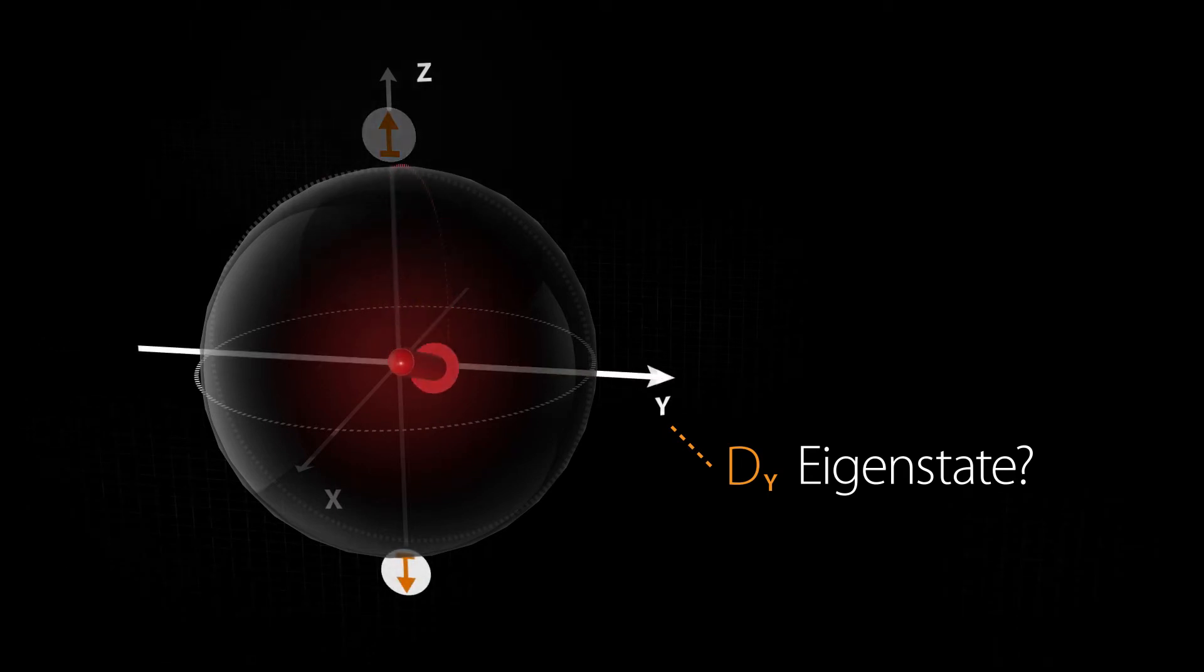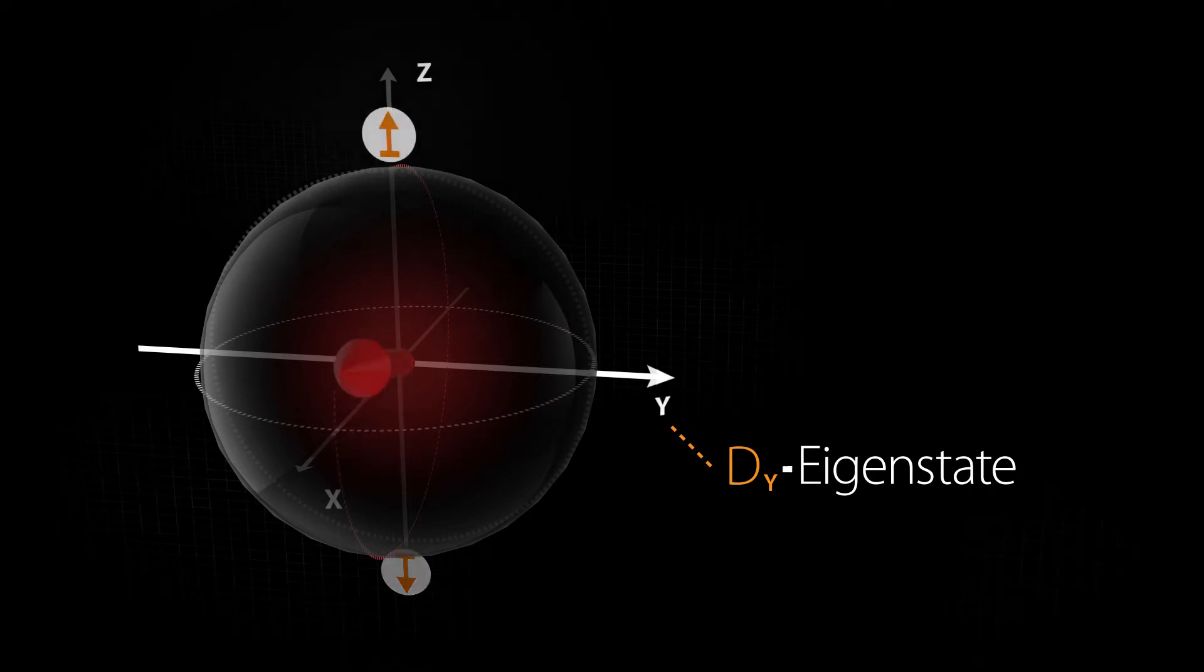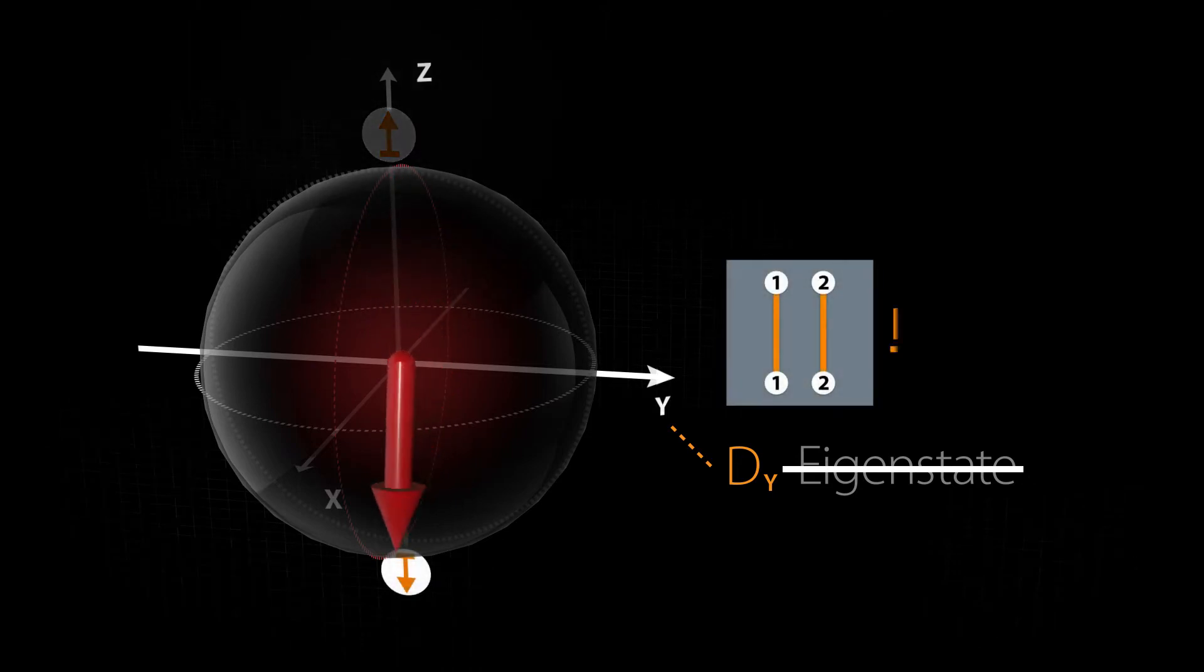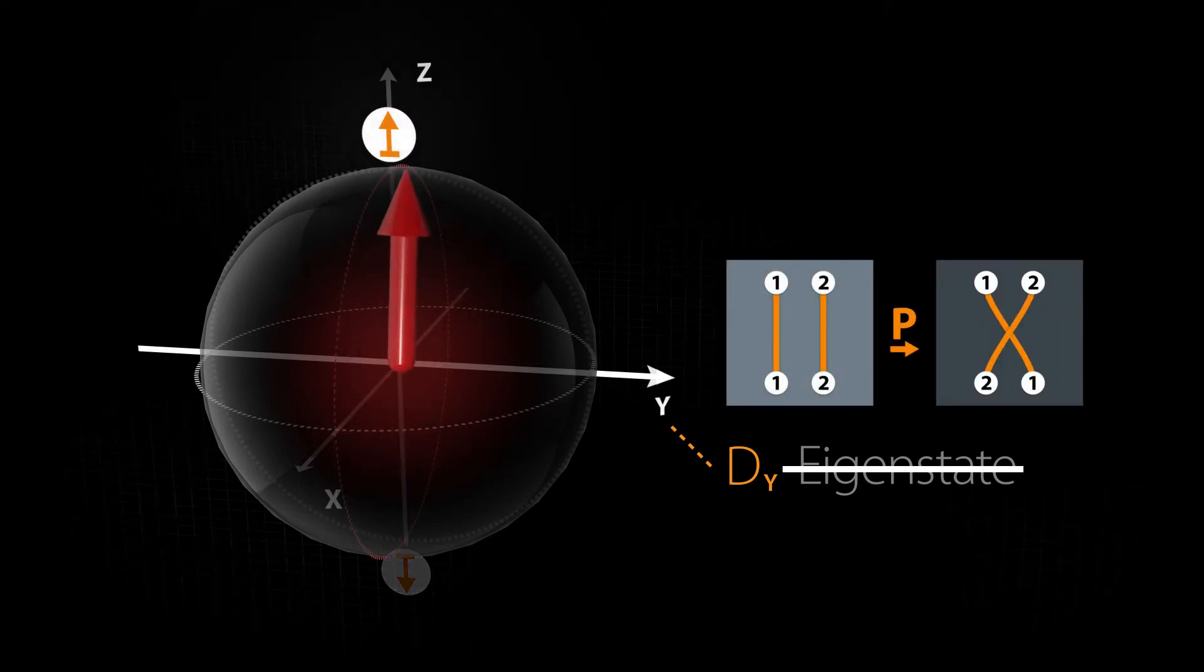For rotations around the y-axis, spin up is not an eigenstate, since the direction of the spin is changed upon rotation. Up becomes down, then up again. A permutation.